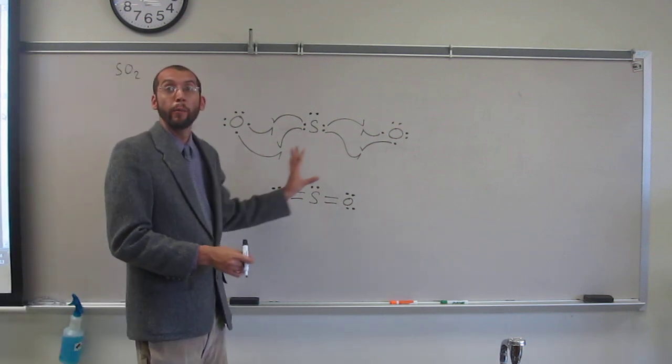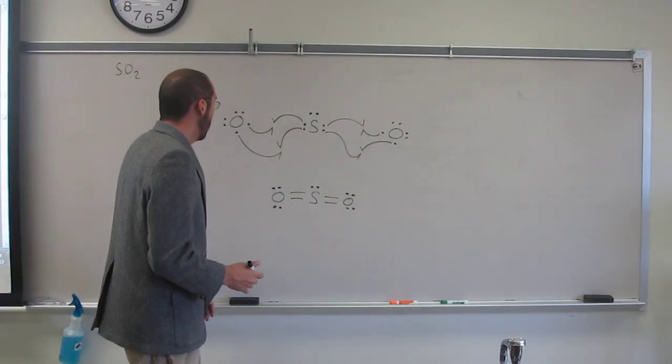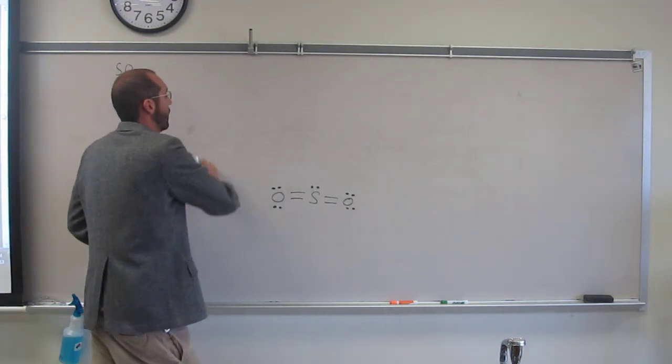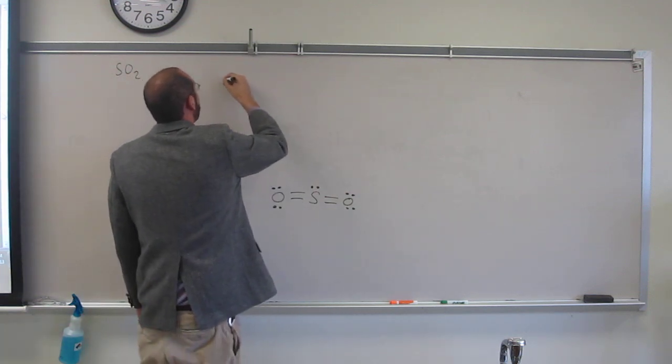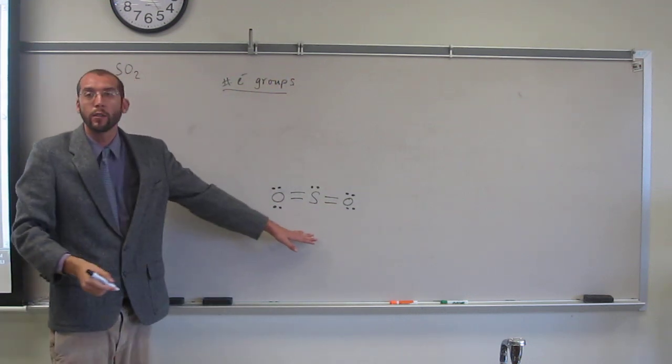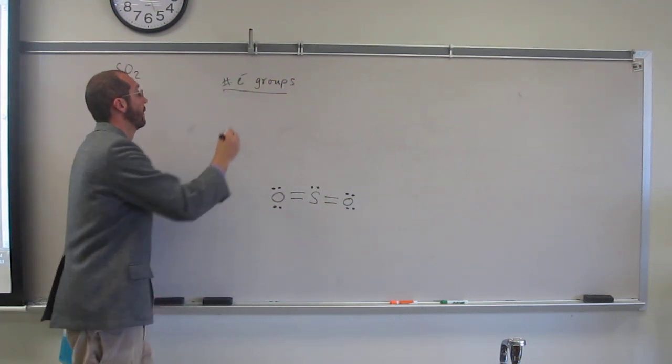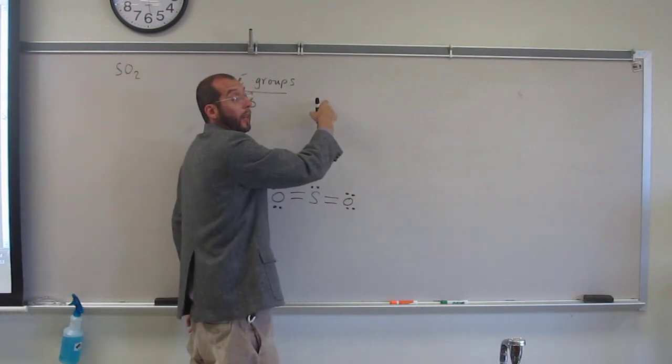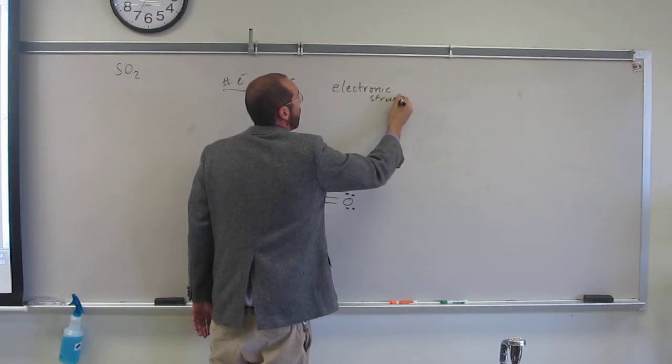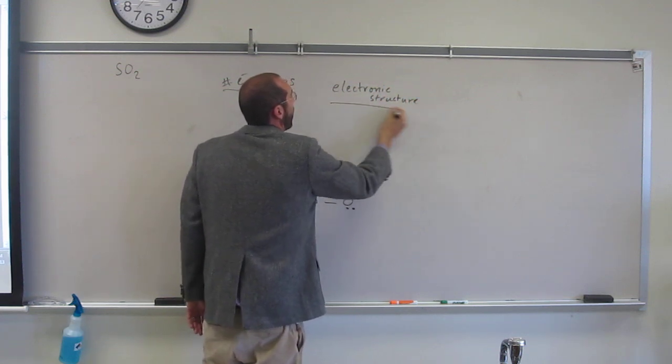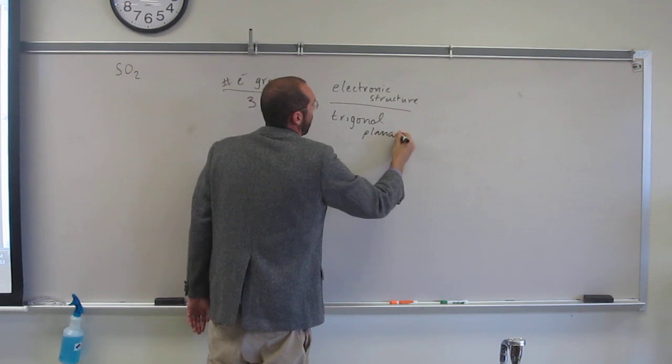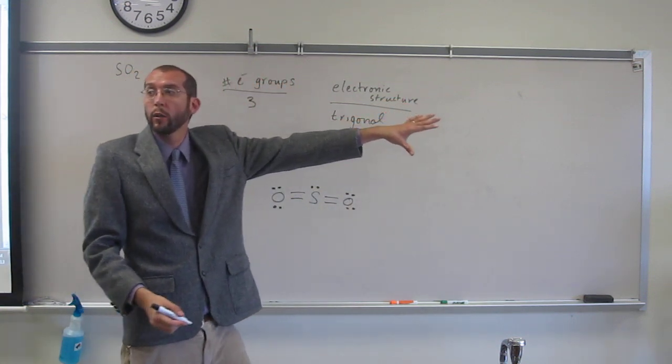So, well, first off, let's just make a table like we did before. So, number of electron groups, how many? Guys, around the central sulfur? Three. Three. So if I have three, what's the electronic structure called? Yeah. The trigonal planar. The trigonal planar.